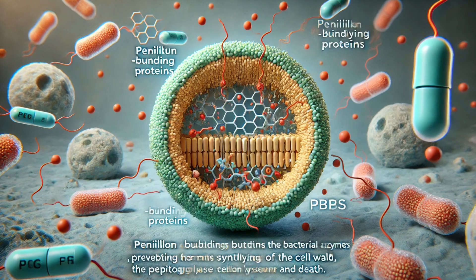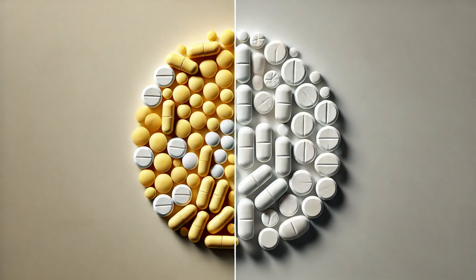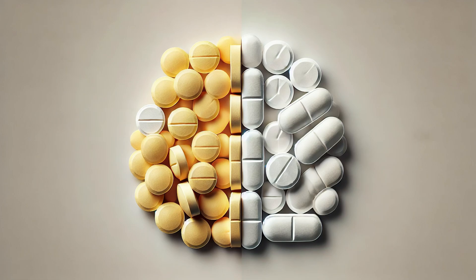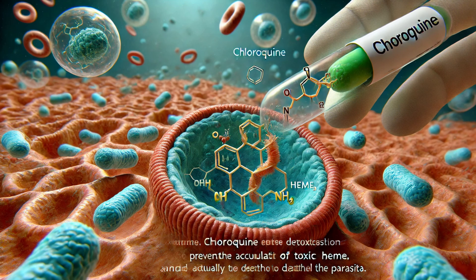To recap: penicillins and cephalosporins inhibit bacterial cell wall synthesis by targeting the peptidoglycan layer, killing bacteria without harming human cells. Tetracyclines and macrolides inhibit bacterial protein synthesis by binding to bacterial ribosomes, preventing bacteria from making essential proteins. Sulfonamides and trimethoprim inhibit bacterial folate synthesis, a pathway not present in humans. Antifungal drugs like amphotericin B and azoles target ergosterol in fungal cell membranes, causing fungal cells to die while sparing human cells. Quinolines such as chloroquine inhibit the malarial parasite's ability to detoxify hemoglobin byproducts, killing the parasite without harming the host.